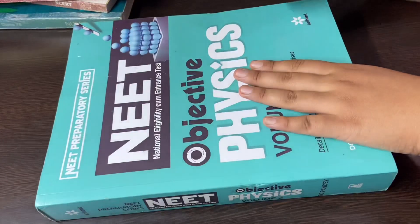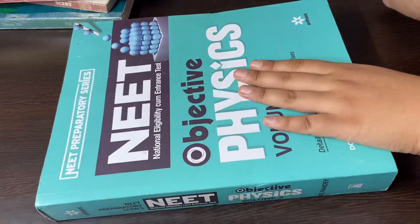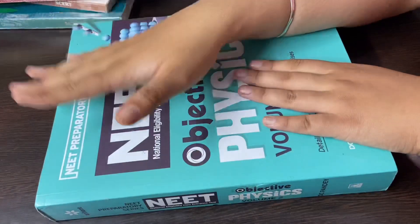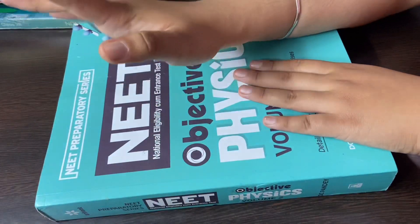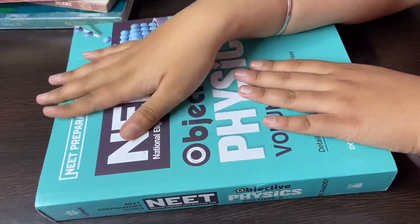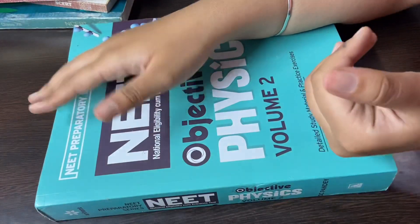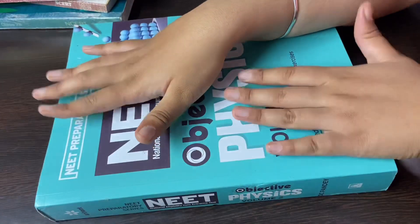I do not buy any reference book for other subjects because I already have MTG and GRB books. I also wanted to buy some previous year question books, but they said the new edition is yet to come.